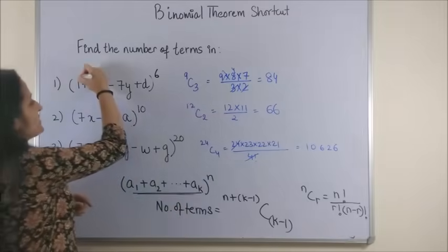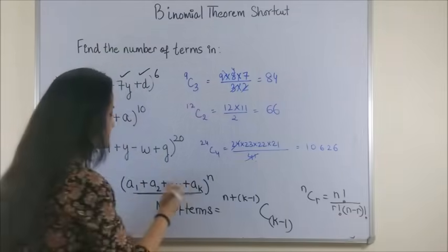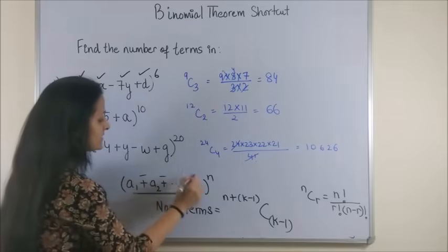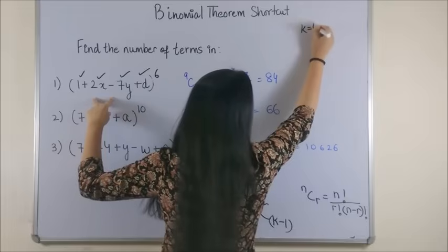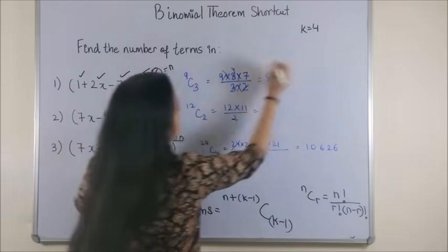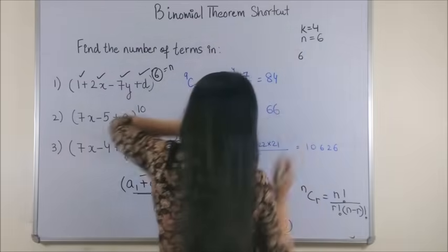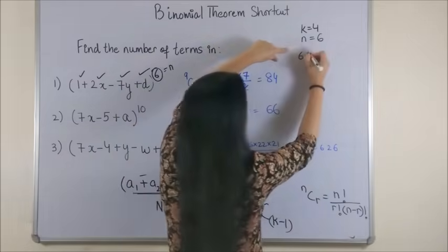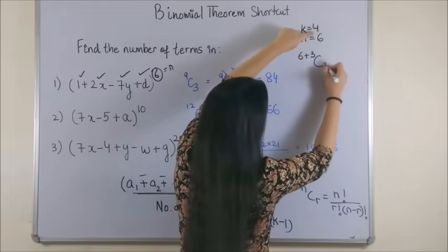So for the first one, as you can see, there are four terms irrespective of whatever sign they have. Plus, minus, it could be anything. So k is 4. That means the number of terms. This power is 6. That's it. So this would be 6 plus k minus 1, that's 3, C k minus 1, that's 3 again.